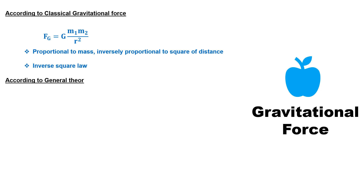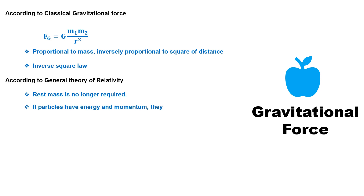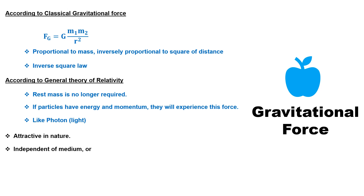But according to Einstein's general theory of relativity, for applying gravitational force between any two particles, it is not necessary for the particle to have rest mass. Rather, if the particles have energy and momentum, then gravitational force on them will be applicable. Because of this, light can also experience gravitational force. Gravitation is a force of attractive nature, which does not depend on medium, orientation, and velocity of particles.